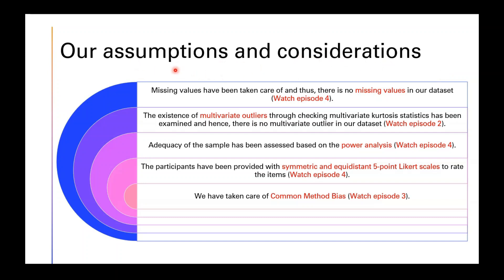Some important assumptions and considerations: I have already handled all missing values — watch episode four for how to address missing values in PLS. I have also checked for multivariate outliers and there are none in this dataset — watch episode two for outlier detection. Power analysis has been done to ensure the sample is adequate — again, episode four covers this topic.